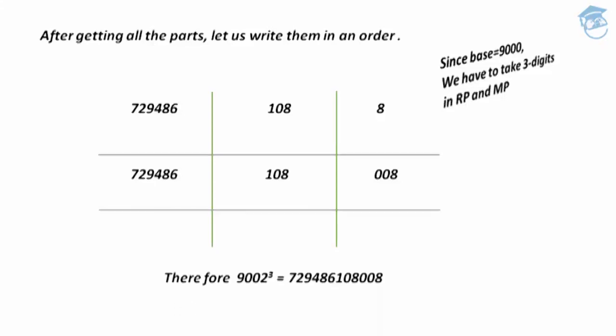Therefore, 9002 cubed equals 729,486,108,008. This is how we use Avadunam Sutra to find the cube of a given four-digit number when the base is 9000. I hope you've understood how to use this Avadunam Sutra when the bases are like 2000, 3000, 4000, 5000, etc. In the next session, we are going to see a new topic in Vedic mathematics. Thank you for watching, have a nice day.